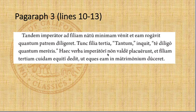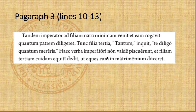'Haec verba imperatori non valde placuere.' These words did not please the emperor very much — literally 'strongly,' but we'll say 'very much.' Notice how imperatori must be dative. Remember, the word placet always takes a dative; the person who is pleased is always in the dative. You could translate it as 'it was pleasing to,' so: these words were not pleasing to the emperor very much.